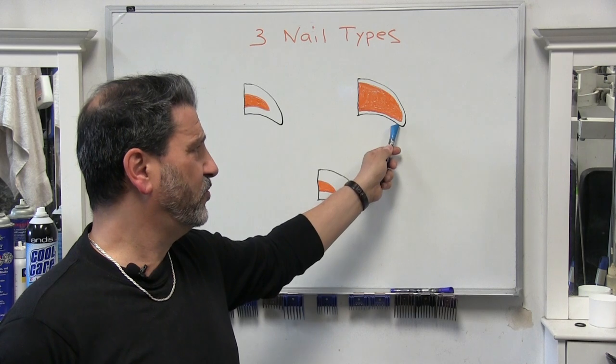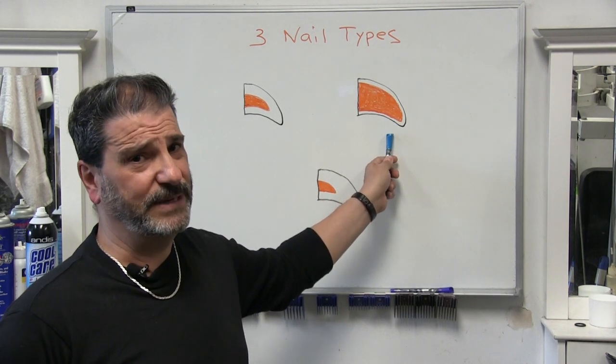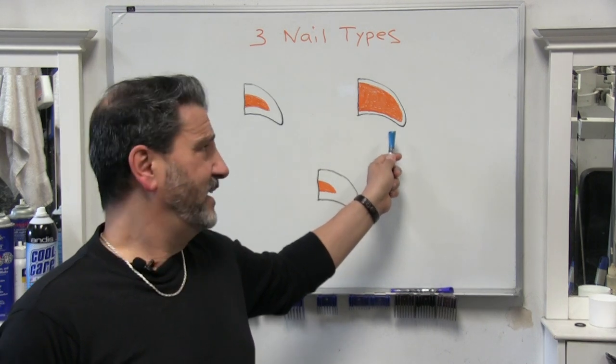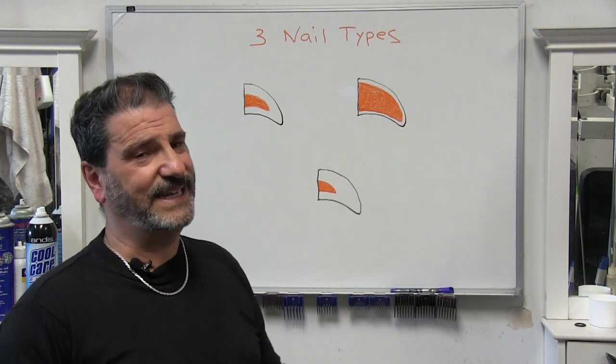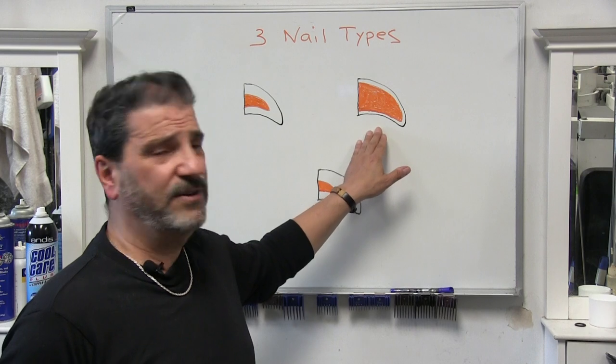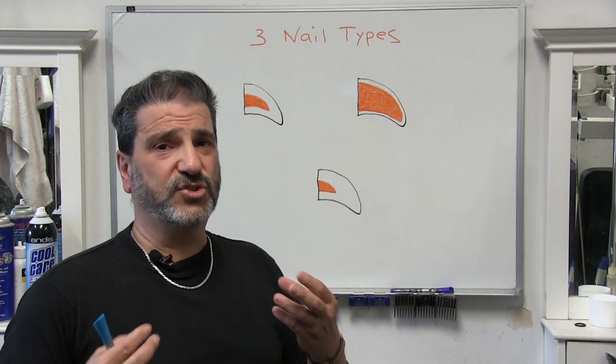And again, the vein is right to the tip, and you want to be really, really careful trimming this nail. A lot of times these breeds—not to single out any breeds—but a lot of times these types of breeds, they really hate their nails being done because it's very, very sensitive. The nail is actually very, very soft.